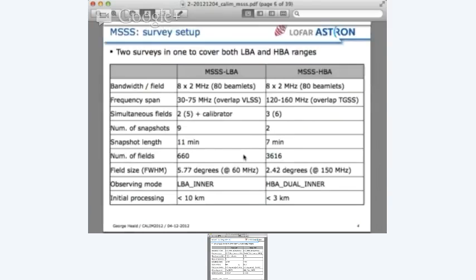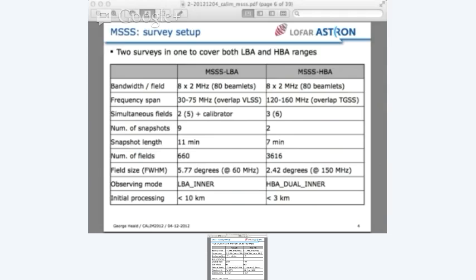The survey was set up in two pieces: the low band part and the high band part. Each mode runs with eight bands, each of two megahertz simultaneously. Each band is a fifth of a megahertz, so 10 subbands grouped together in eight chunks simultaneously, spanning 30 to 75 in the LBA with one overlapping the VLSS band. In the HBA, 120 to 160, with one band overlapping the GMRT band. We do two fields simultaneously in the LBA plus a calibrator. The calibrator is done in parallel. Now with 8-bit mode, we're shifting to five fields plus a calibrator. In the high band, three simultaneous targets, now becoming six with 8-bit mode. The calibrator is done in serial instead of parallel.